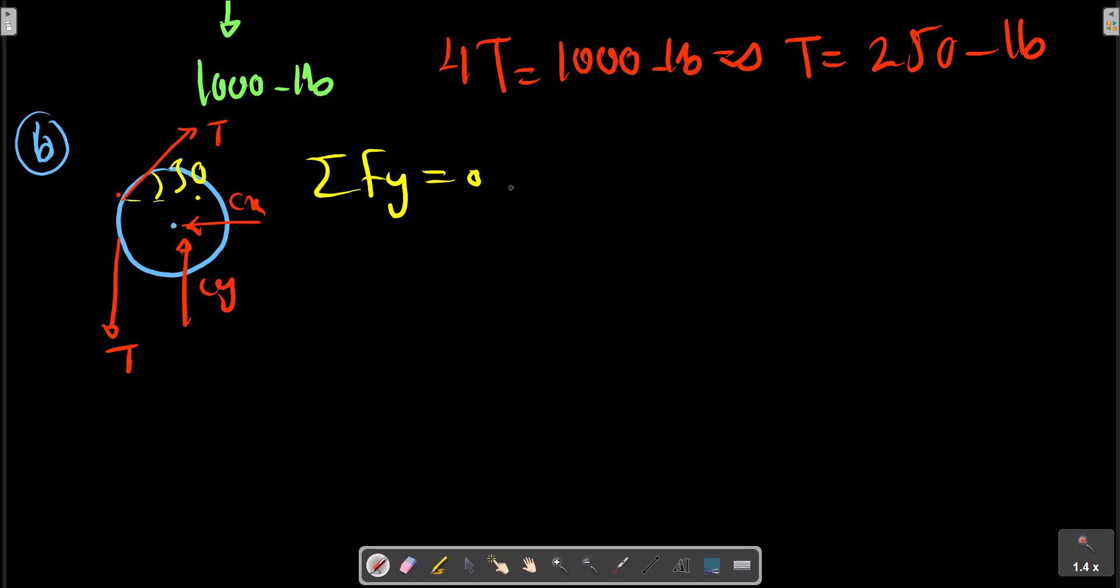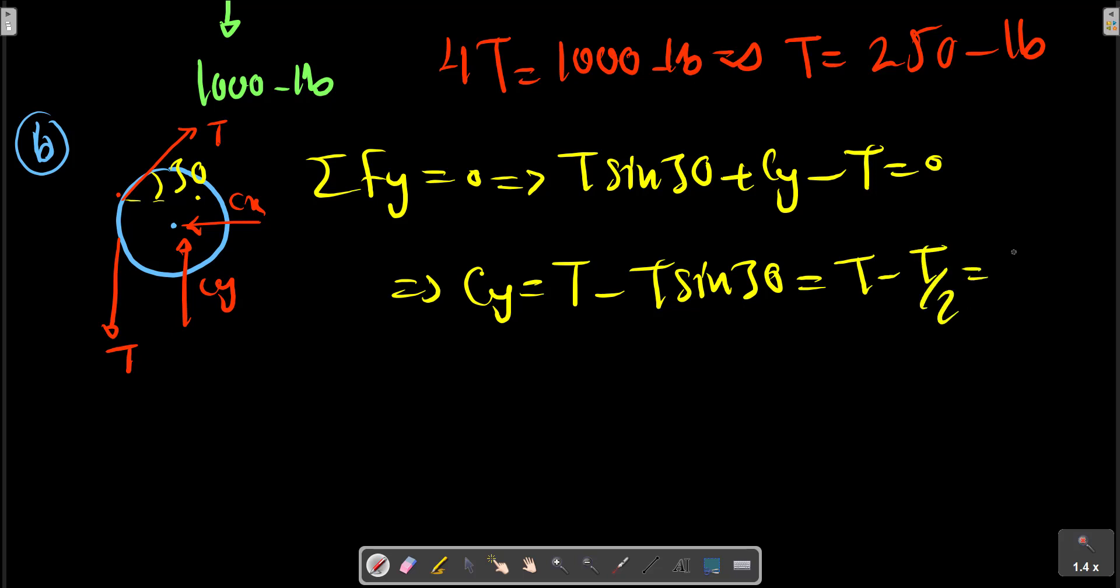In the y direction: T sin 30 plus Cy minus T equals zero. Cy equals T minus T sin 30. Sine 30 is one-half, so Cy equals T minus T/2, which equals T/2.